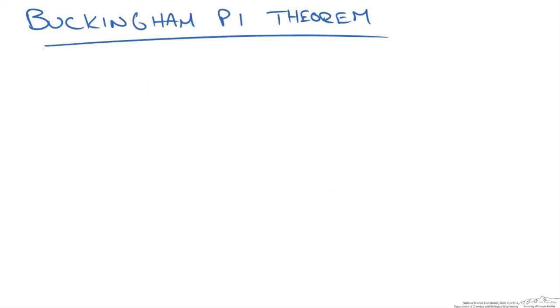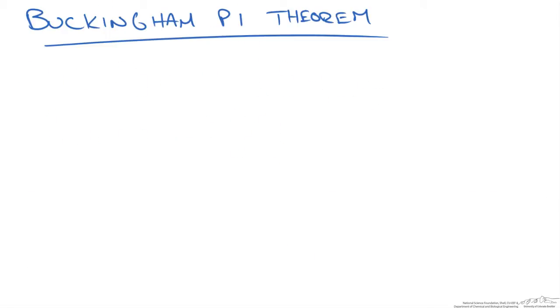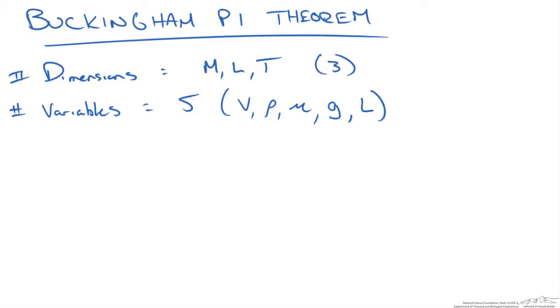So I am going to use this method to create our dimensionless terms. So first we need to determine how many dimensionless terms we will have. So we do this by subtracting the number of dimensions from the number of variables. So the number of variables are 5. So our dimensions to characterize these 5 variables are mass, length, and time. So we have 3. So our dimensionless pi terms is just 5 minus 3. So we will have 2 different terms.